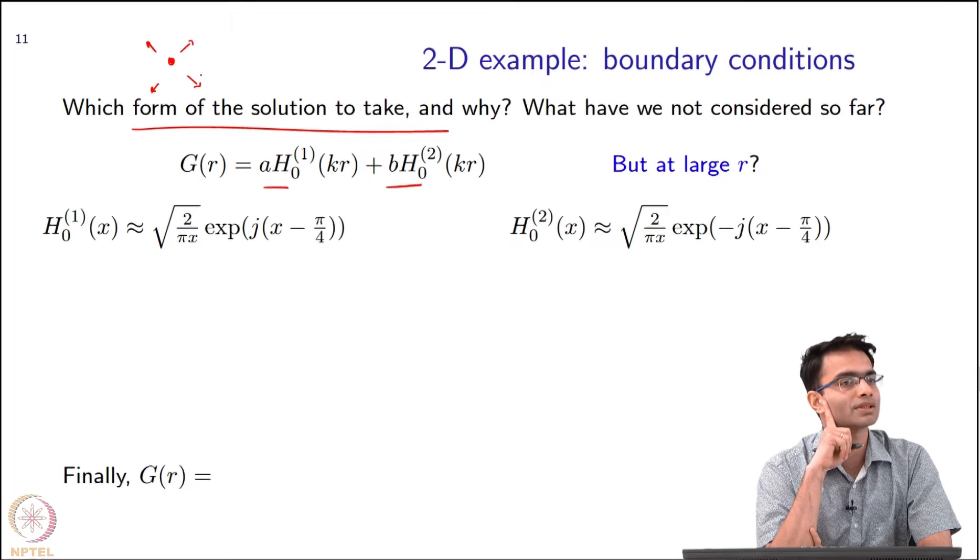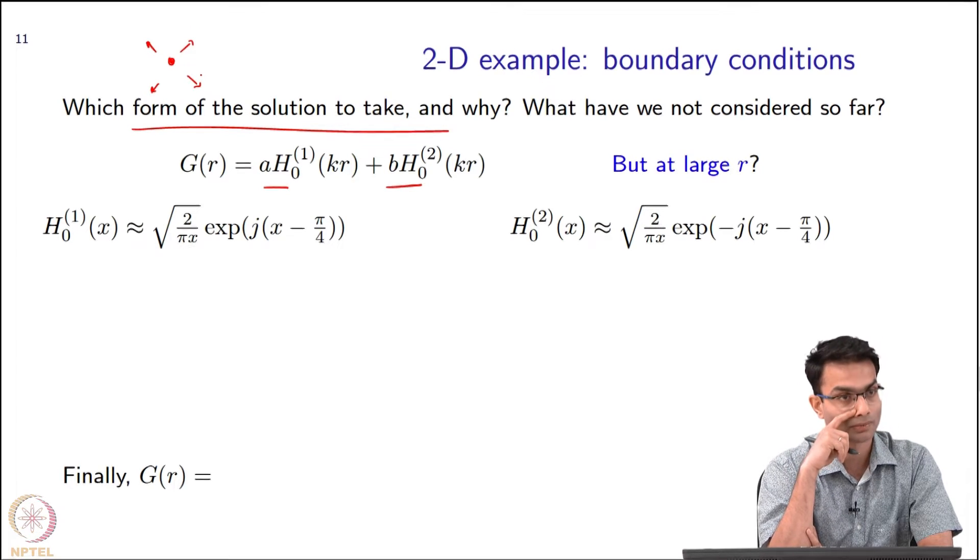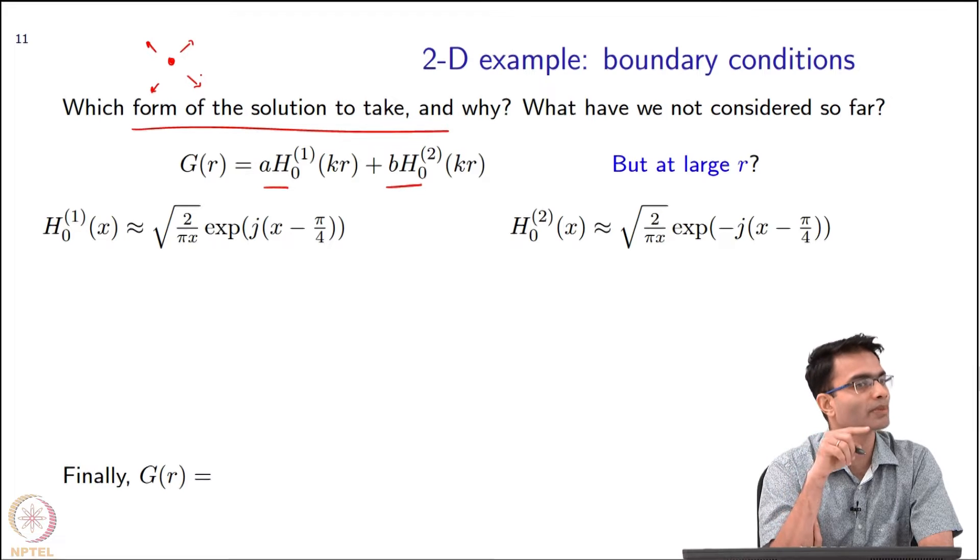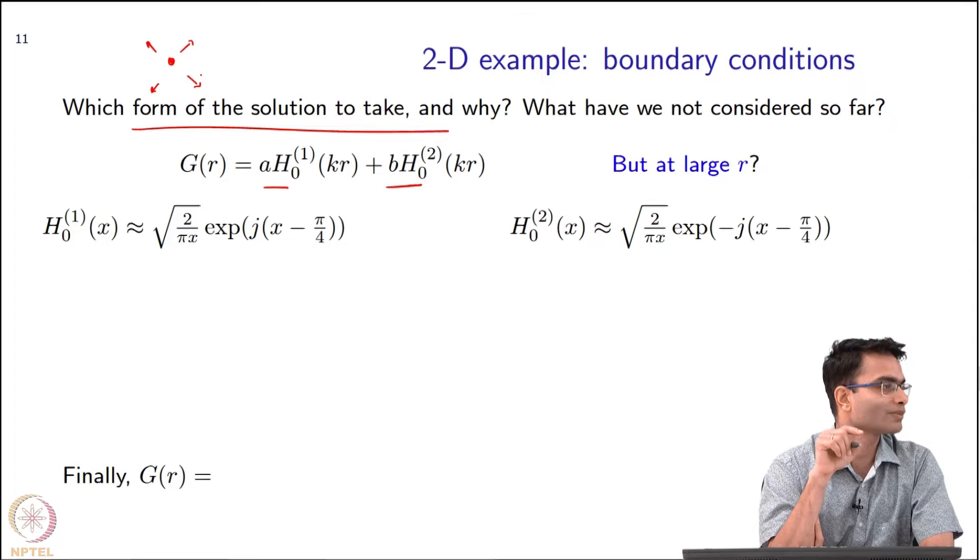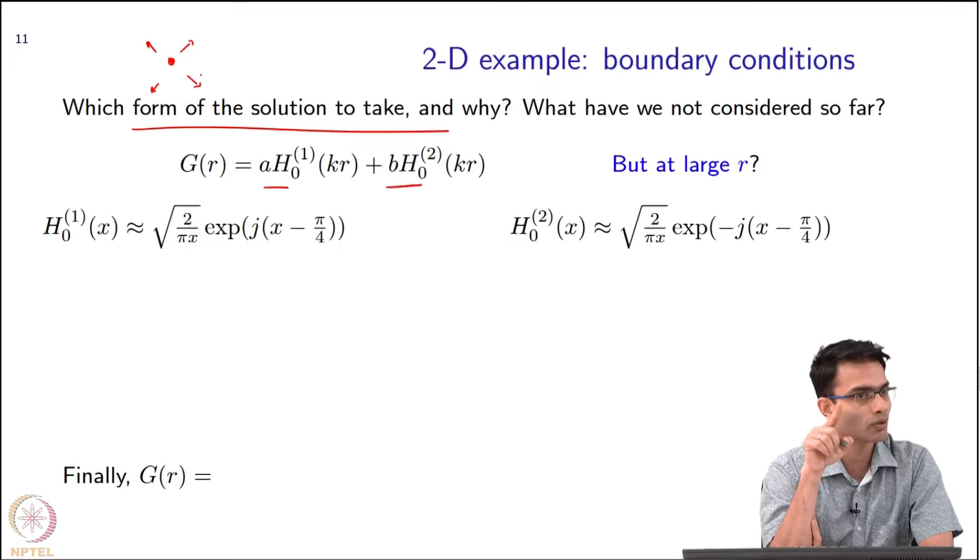Let me give you a hint. What is the time convention I have assumed throughout this thing? In the very beginning, remember Maxwell's equation, there was a d by dt and I assumed a time harmonic case. I put e^(jωt).